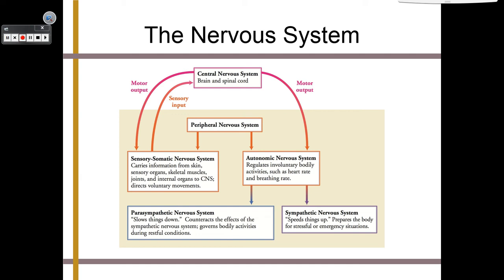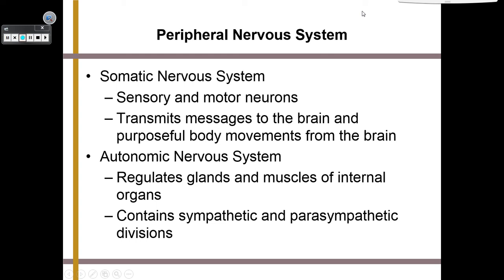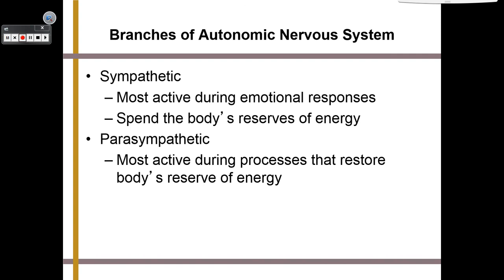This chart breaks down all the different divisions of the nervous system. The central nervous system is your brain and spinal cord. The peripheral nervous system contains all the efferent and afferent nerves throughout your body. Within the peripheral system you have the somatic nervous system, the autonomic nervous system, and the sympathetic and parasympathetic branches. Another chart shows the many ways our body responds automatically through the autonomic nervous system — for example, how your pupils are constricted or become dilated.